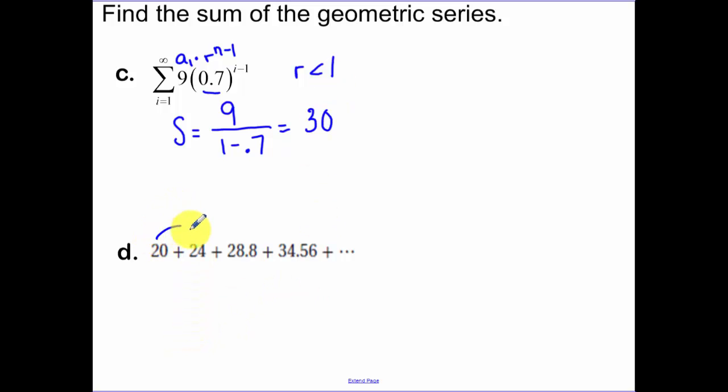To get from 20 to 24, 24 over 20 equals 6 over 5. If I take 24 and multiply by 6 over 5, we do get 28.8 and then 34.6. So our common ratio, 6 over 5, is greater than 1. So therefore, this has no sum.